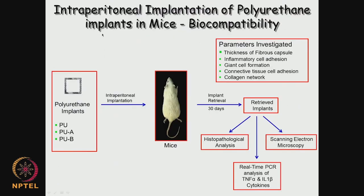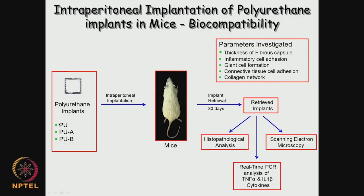We can take out certain tissue samples from the heart and see whether there are changes after the polymer has been placed for 30 days, proving there is no change in arrangement of myocardial fibers. We can take out kidney samples to see whether there is any change compared to control, look at liver samples with and without the polymer, and also take tissues from the brain to check for no inflammation. We can also look at whether any giant cells have been formed, whether any connective tissues have been formed, or whether any collagen network has been formed.